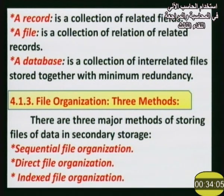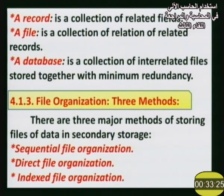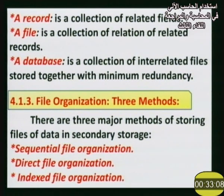A file is a collection of related records. A database is a collection of related files stored together. So the hierarchy goes: characters make up fields, fields make up records, records make up files, and files make up the database.